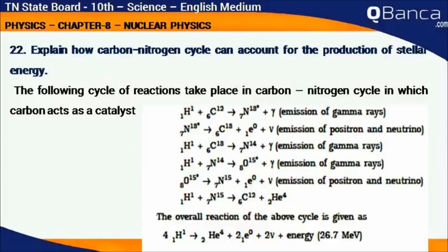N713 gives C613 plus E0 plus neutrino. H11 plus C613 gives N714 plus gamma.